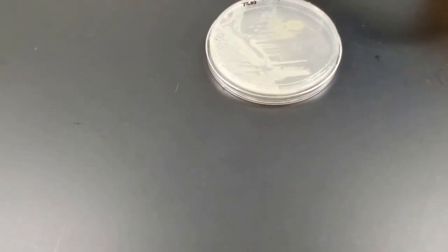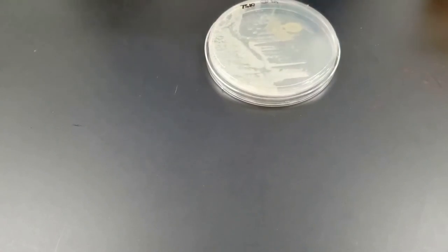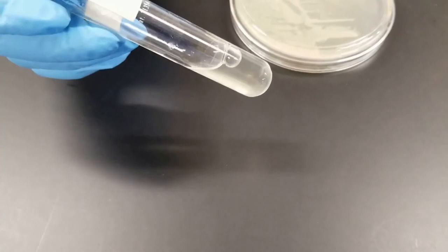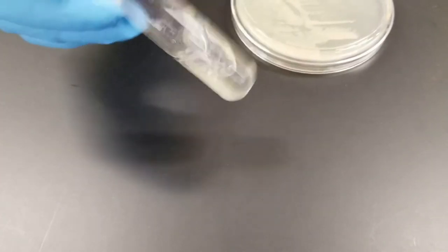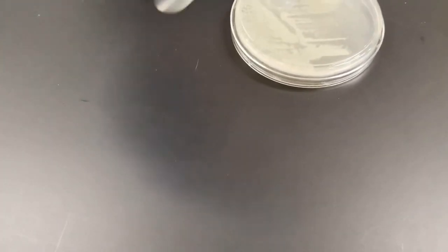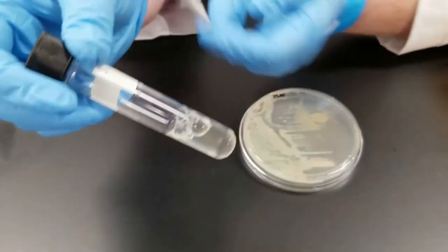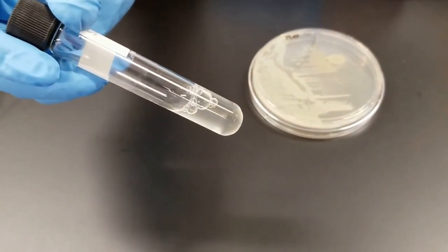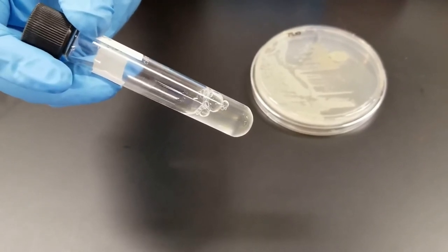Now we also grew this in a nutrient broth. So once again, we did get nice growth. Oftentimes when you grow bacteria, it tends to kind of settle along the bottom a bit, so you may have to swirl it a bit. Any cloudiness does indicate growth.